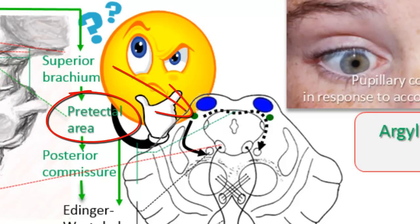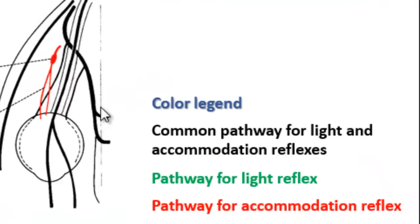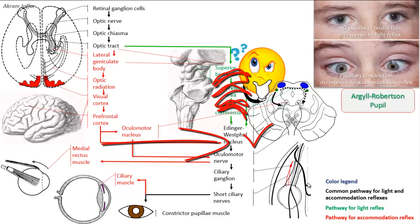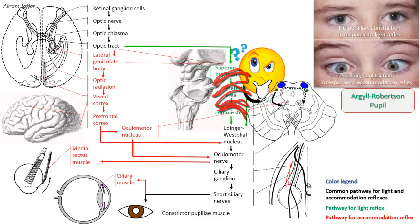The pre-tectal area is part of the pupillary light reflex pathway, but it is not part of the accommodation reflex. So if this area is abolished, there will be no pupillary constriction in response to light. But pupillary constriction can still happen through the accommodation reflex, because the accommodation reflex does not require the presence of the pre-tectal area in order to complete the pathway that results in constriction of the pupil.